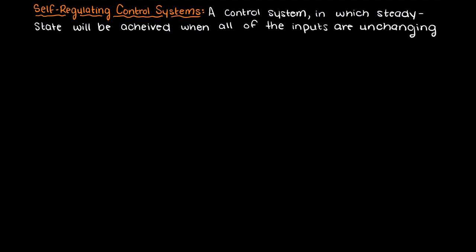A self-regulating system is a control system in which a steady state will be achieved when all of the inputs are unchanging. So a self-regulating system does not require any user input to reach a steady state.